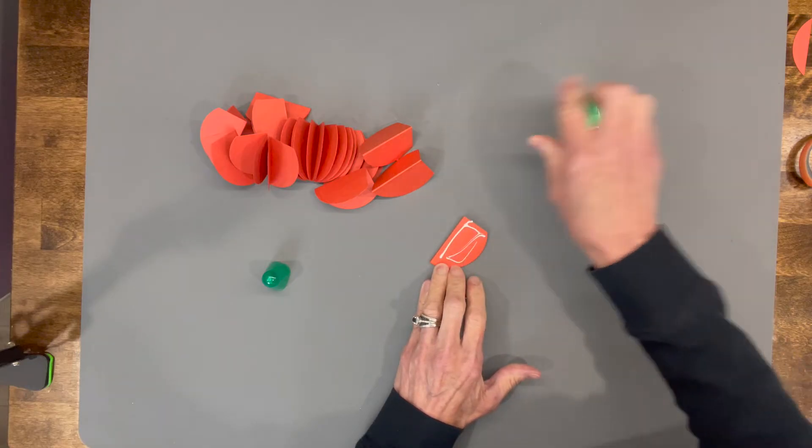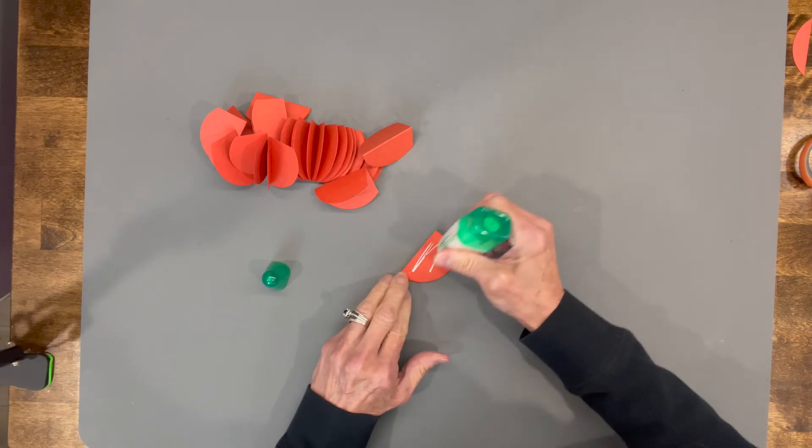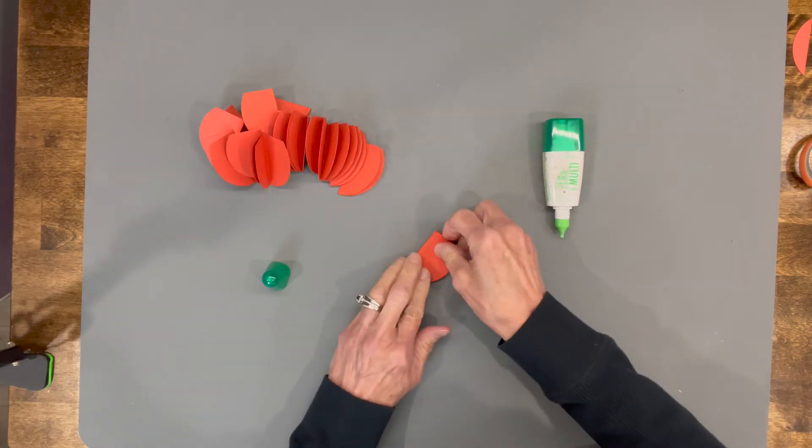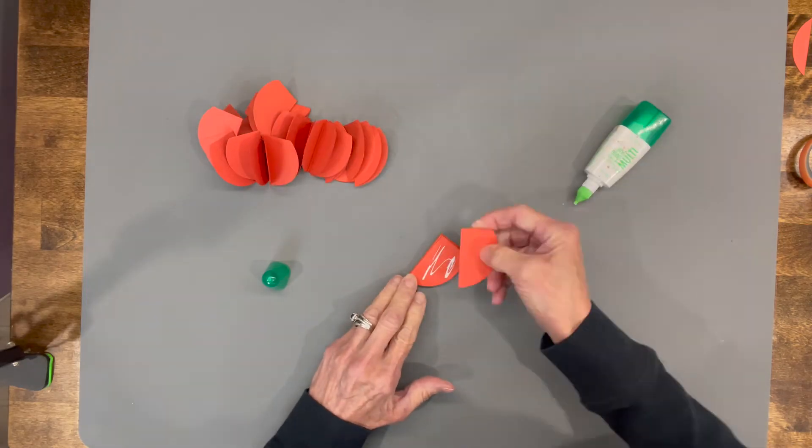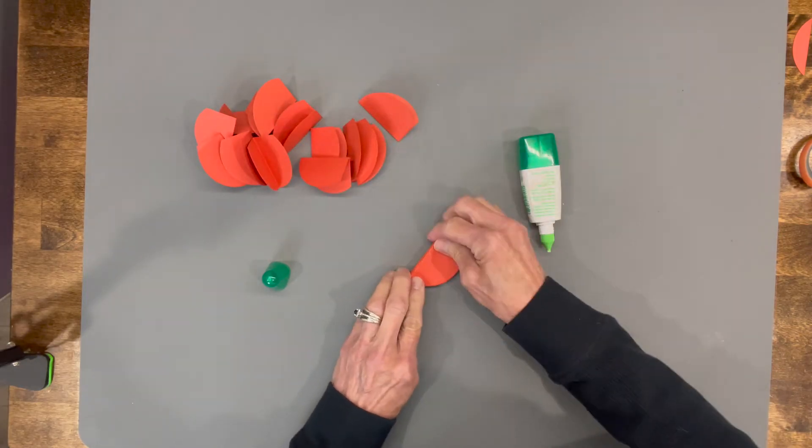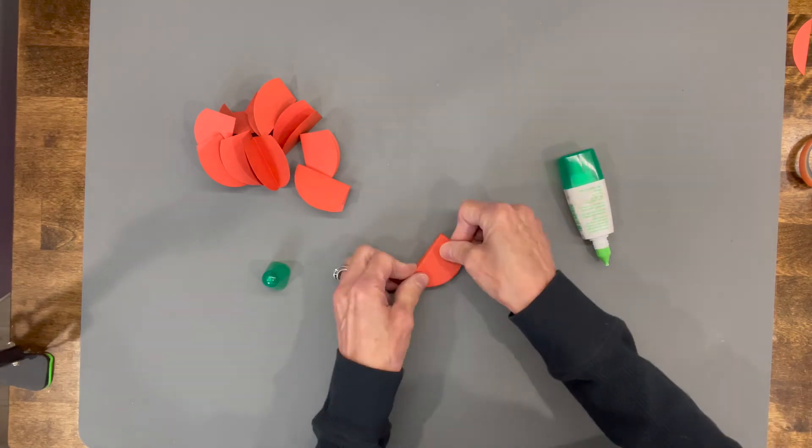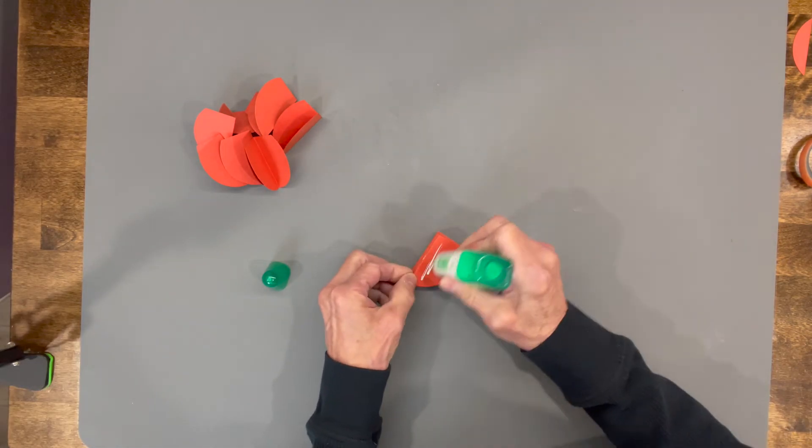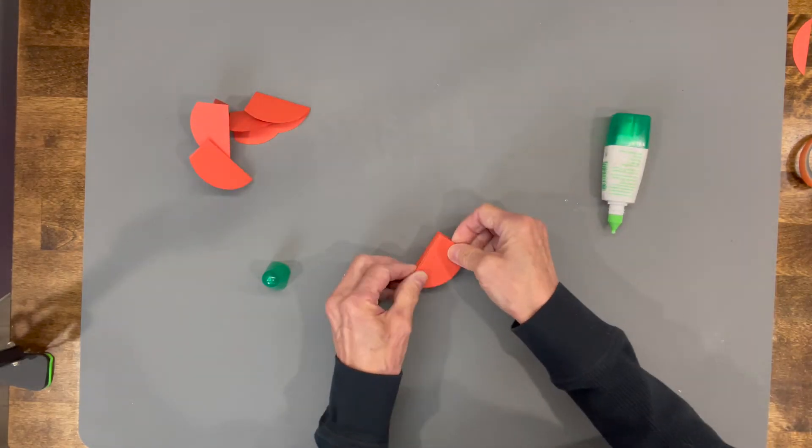Once you get everything cut out, you can probably put them together in about 10 minutes. Just keep checking them every once in a while while you're doing it, just to make sure that they are still lined up good.